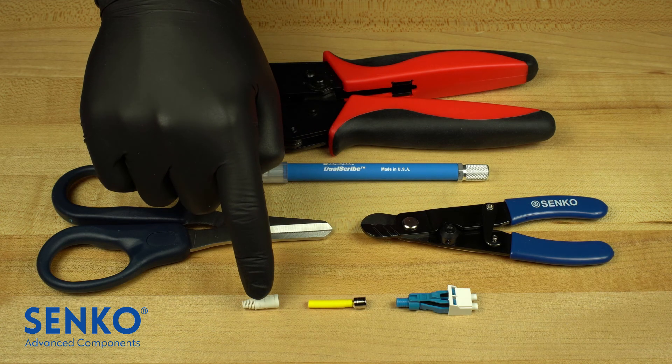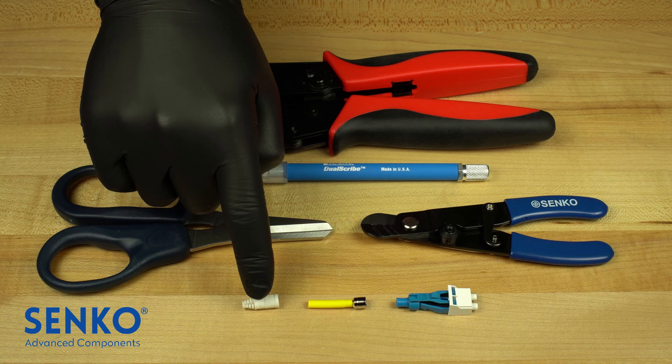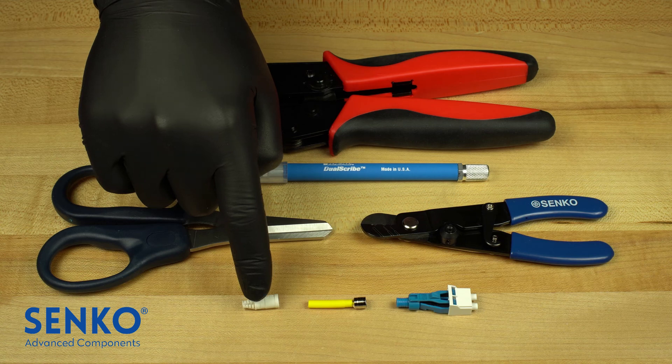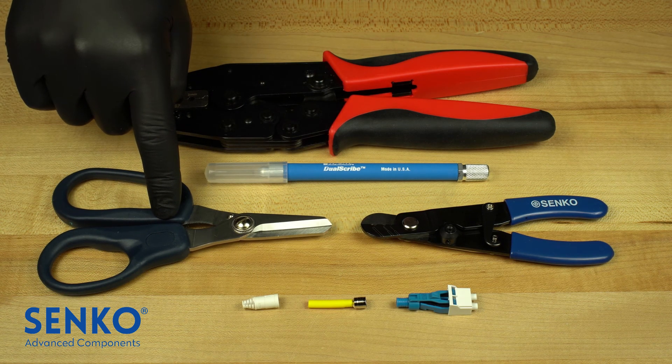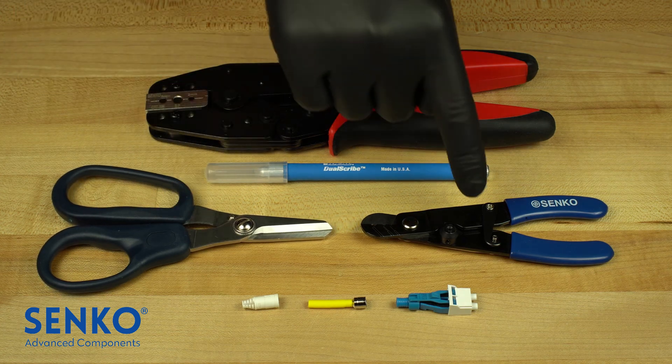It's worth noting that terminating on 3mm cable follows a very similar procedure but requires a 2-step crimp ring instead of the crimp heat shrink combination. You will also need the following tools: aramid yarn shears, cable strippers,